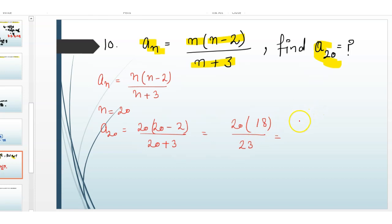Now multiply 20 multiplied with 18, then it will be 360 divided by 23. Then the 20th term is equals to 360 divided by 23.